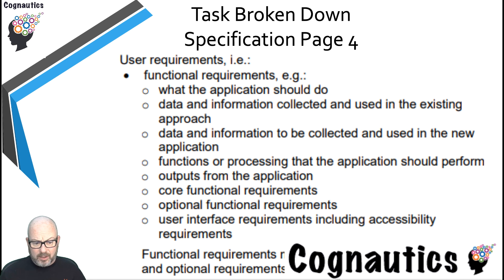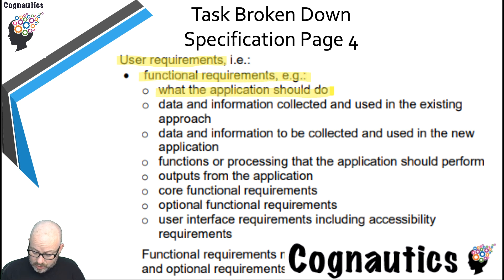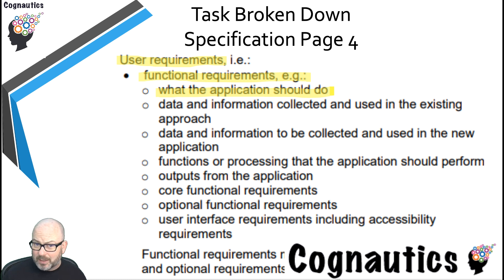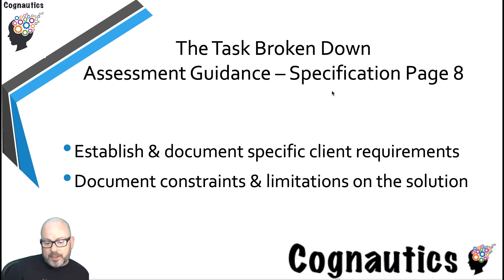We're going to start at the top, looking at user requirements and functional requirements — what the application should do. This first part is by far the most important part of this task. If you get this right and figure out everything the application should do, the rest flows quite easily. If you make mistakes here it becomes harder to unpick, a bit like the waterfall method.